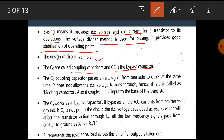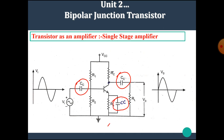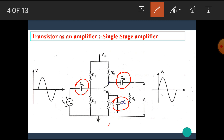The coupling capacitor CC passes an AC signal from one side to the other side. At the same time, it does not allow the DC voltage to pass through it. Hence, it is called as the blocking capacitor; it also couples the VIN input to the base of the transistor. The main function of the coupling capacitor is to pass the AC supply and block the DC component. This capacitor blocks the DC components present in the input supply and allows only the AC component to pass towards the base.